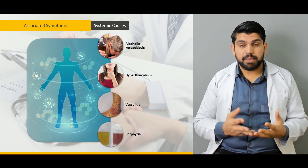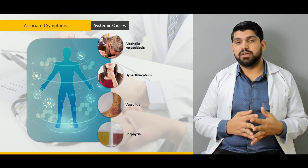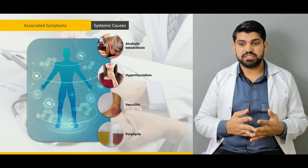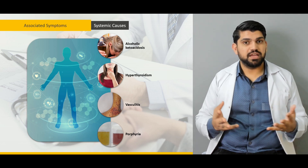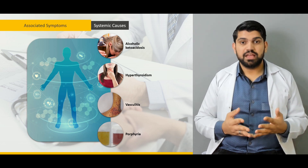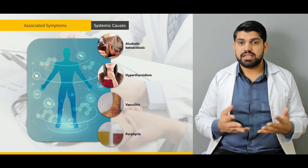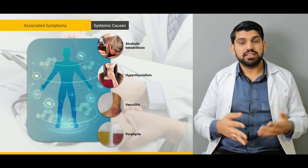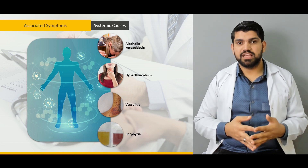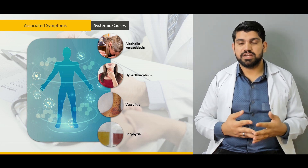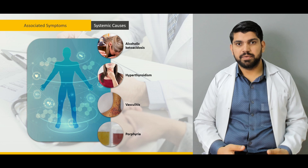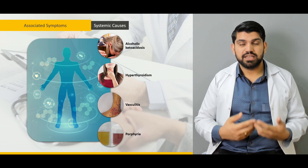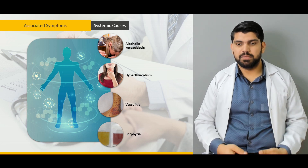Systemic causes of abdominal pain — for example, ketoacidosis, hyperthyroidism, muscle spasm, abdominal wall hematomas. There are multiple systemic conditions that can present with abdominal pain.